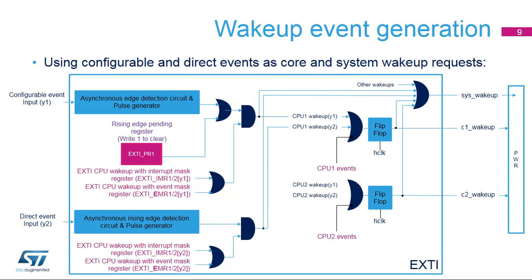For direct events, the flag is located in the peripheral unit. These flags enable the software to find the cause of the wake-up. The wake-up indication is asserted when either the wake-up or the event generation is enabled — see the OR gate combining EXTI-IMR and EXTI-EMR registers. All CPU wake-up signals are OR'd together and then OR'd with the event requests. Syswakeup is asynchronous and wakes up the clocks; once HCLK is running, the synchronous C1 wake-up and C2 wake-up is generated to wake up the respective CPU.